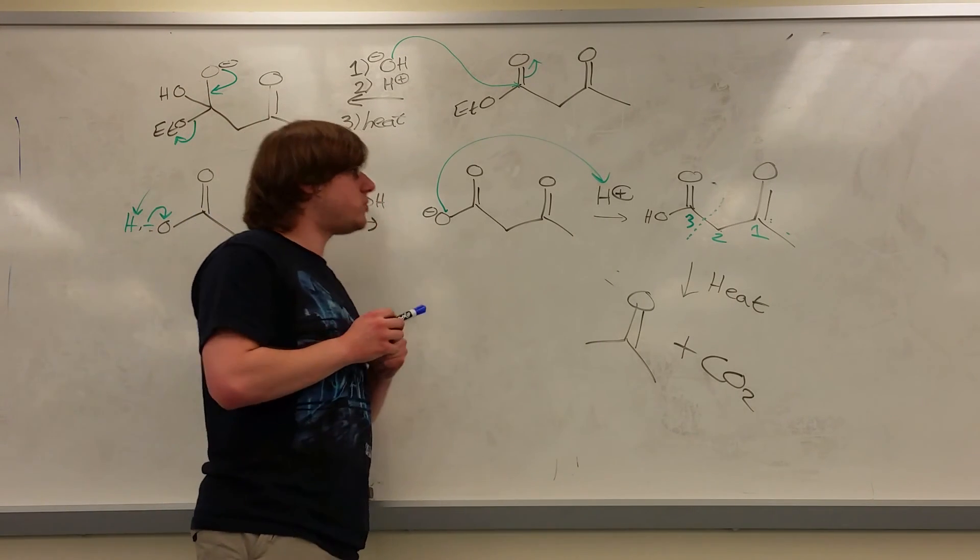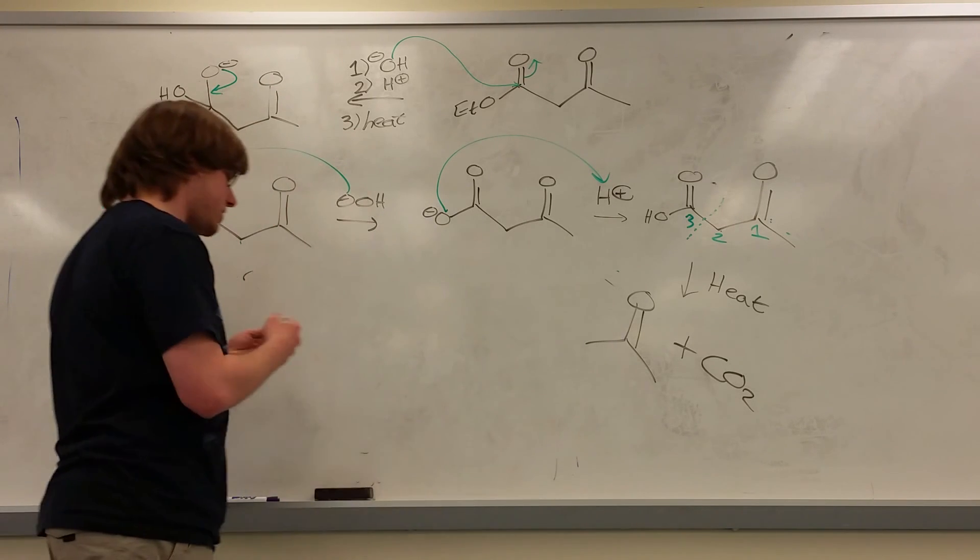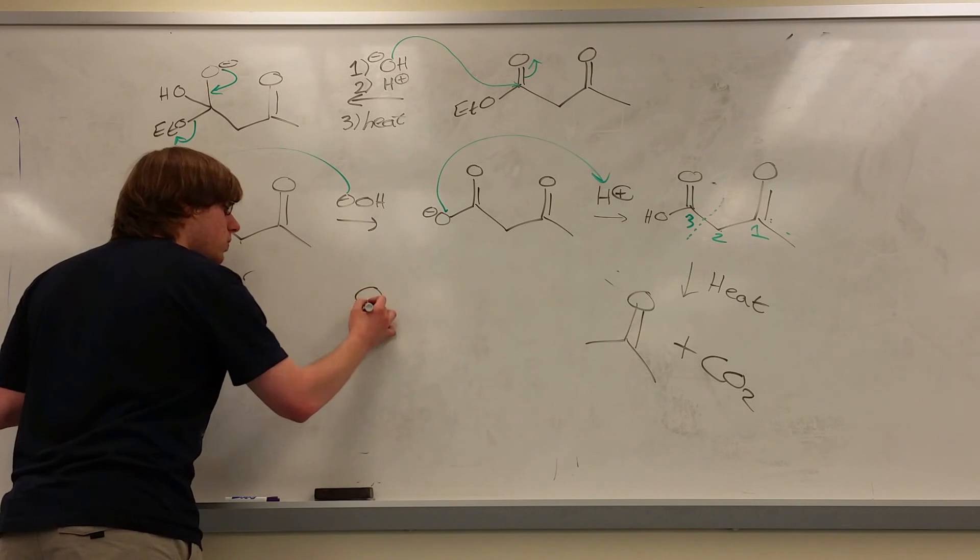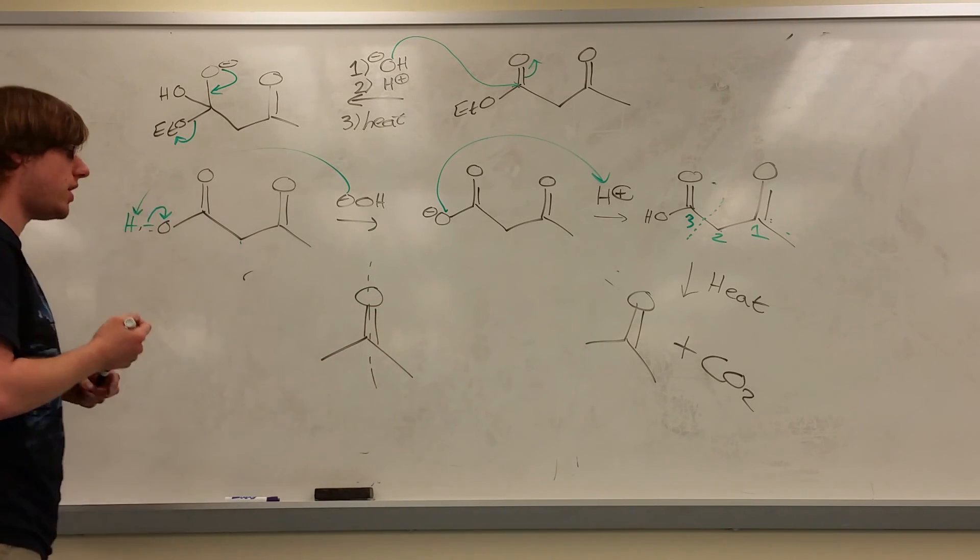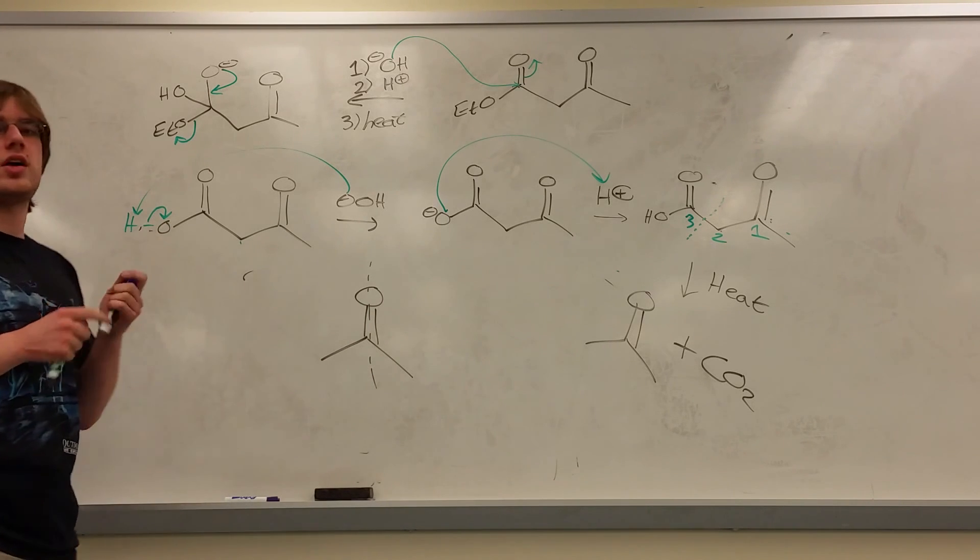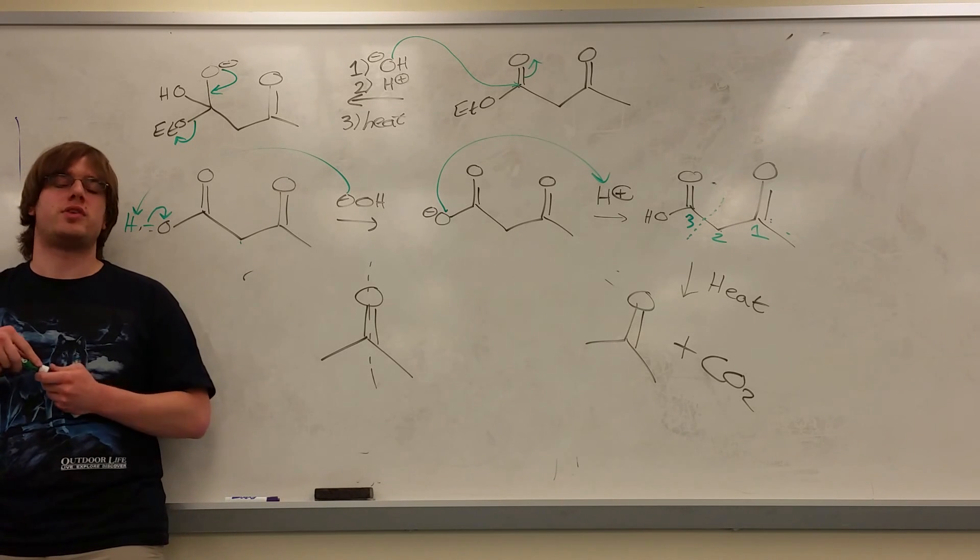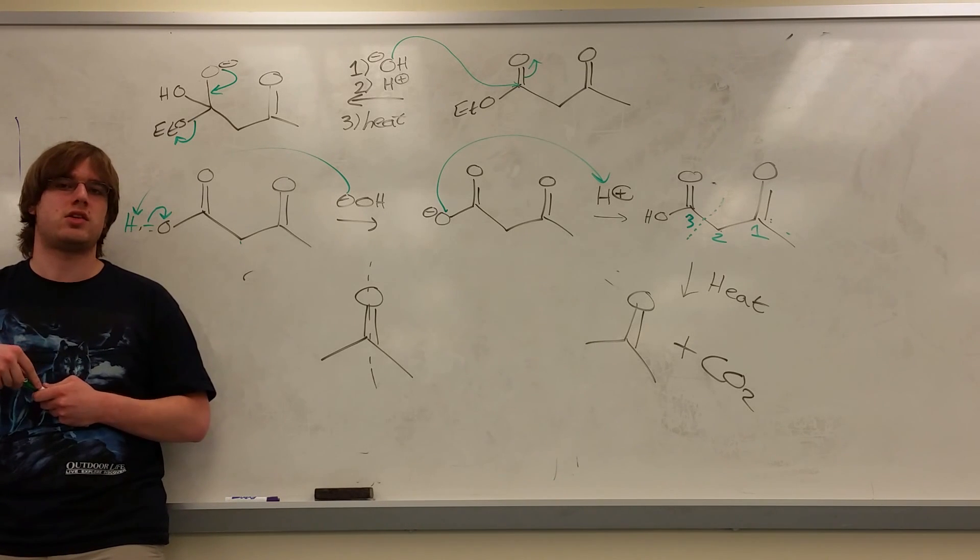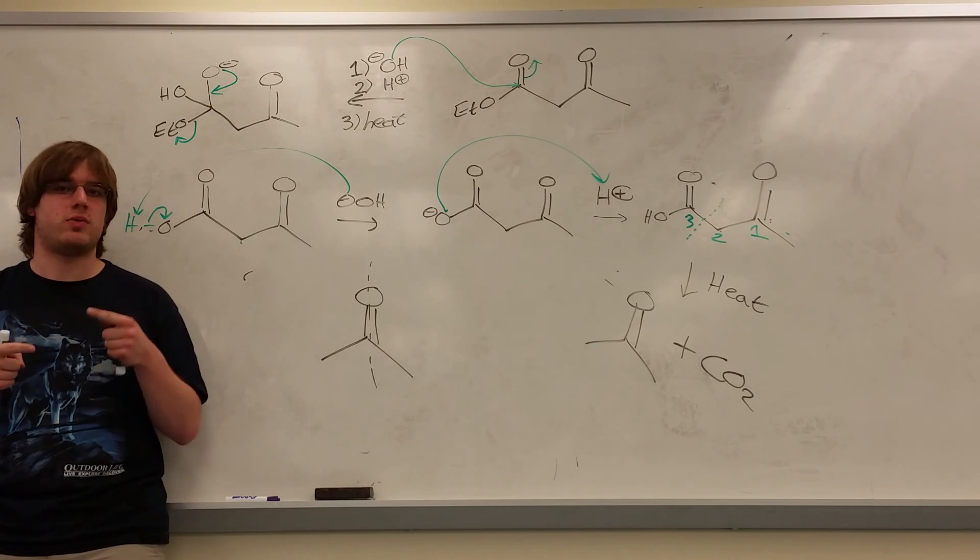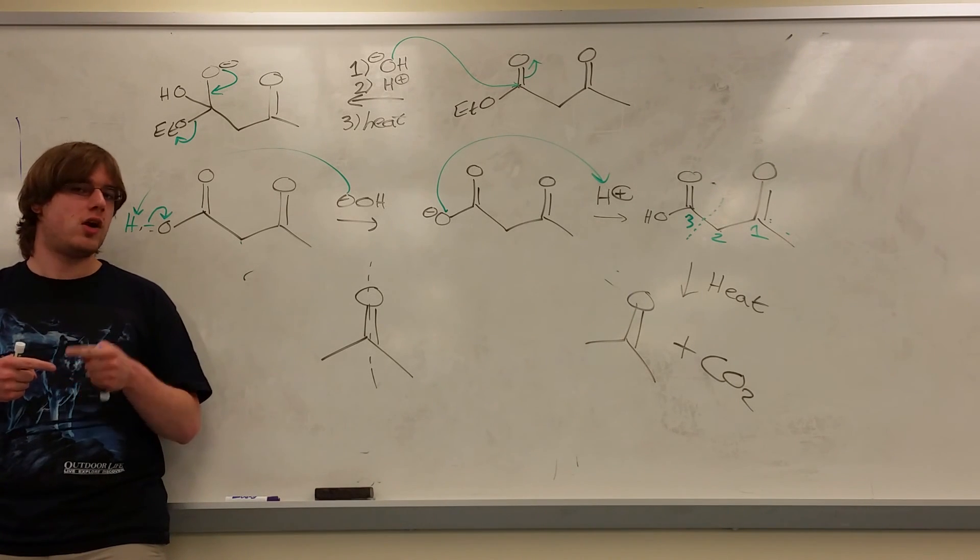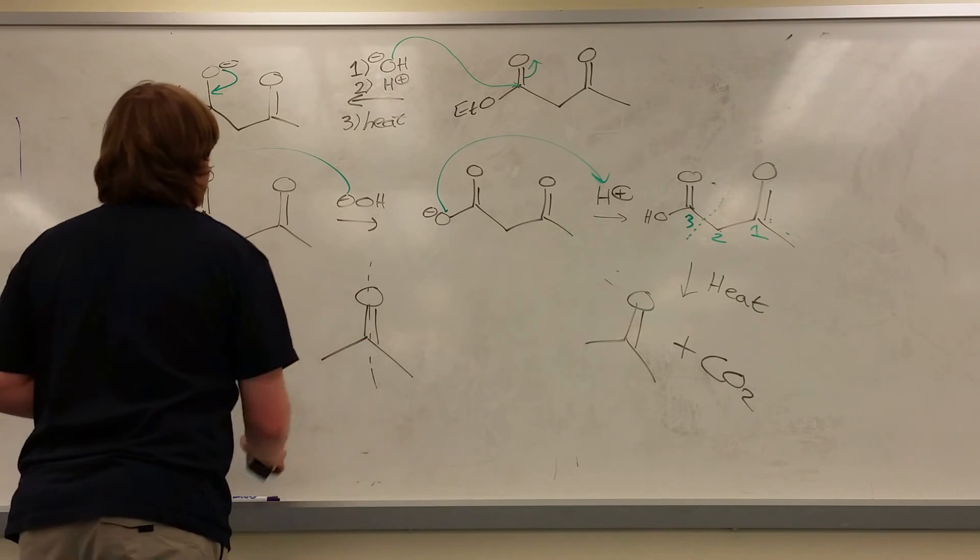Now, one thing to always point out, and this is where they use it in synthesis, is the fact that, look at the ketone we made for a second. We made a ketone that is symmetric. Everything is the same on the left as it is on the right. And it turns out, whenever you do a Claisen condensation where the two esters are the same, and then you follow that reaction with a decarboxylation event, you always form a symmetric ketone. And so they can use this in a synthesis problem.